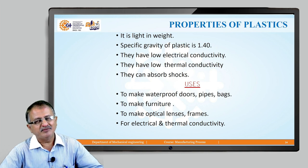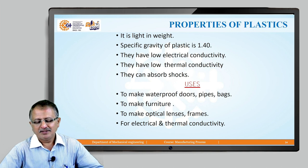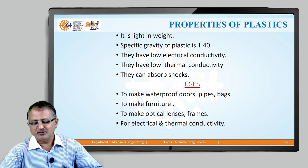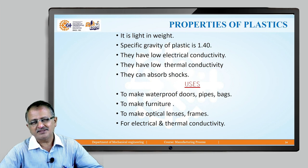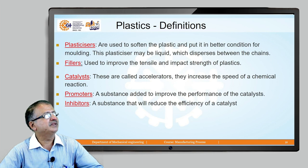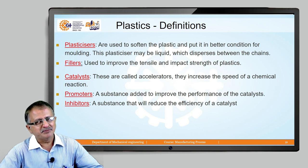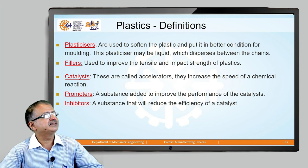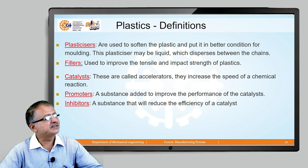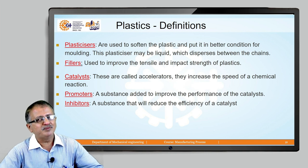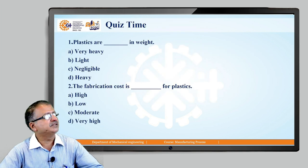We have seen the properties of both thermosets and thermoplastics. Their uses include packing, building material, the automobile industry, furniture, toys, insulation, electrical and cables, housewares, the medical field, and even 3D printing applications. When plastic is deployed for processing, additives are used: a plasticizer is used to soften the plastic; fillers are used to improve tensile and impact strength; catalysts, also called accelerators, promote the speed of reactions; promoters improve the performance of catalysts; and inhibitors reduce the efficiency of catalysts.